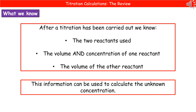Welcome to our review on titration calculations. Once we've actually carried out a titration, there's a few things that we then know. We know the two reactants that we've used, we know the volume and concentration of one of the reactants, and we know the volume of the other reactant. From those three bits of information, we can actually calculate the unknown concentration.